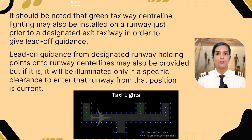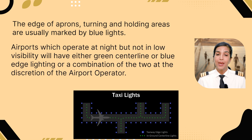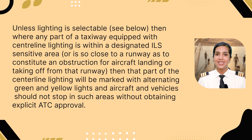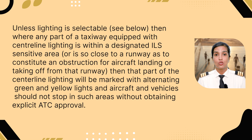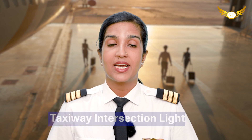The lead-on guidance from a designated runway holding point onto the runway centerline may also be provided, but if it is, it will be illuminated only if a specific clearance to enter that runway from that position is current. The edge of aprons, turning and holding areas are usually marked by blue lights. Airports operating at night but not in low visibility will have either green centerline or blue edge lighting, or a combination of the two, at the discretion of the airport operator. Where any part of a taxiway equipped with centerline lighting is within the designated ILS sensitive area or close to a runway so as to constitute an obstruction for aircraft landing or taking off, that part of the centerline lighting will be marked with alternating green and yellow lights, and aircraft and vehicles should stop in such areas without obtaining explicit ATC approval.